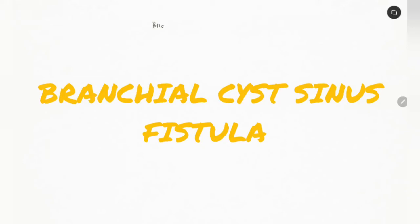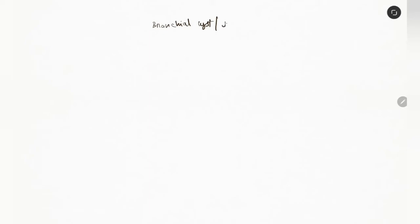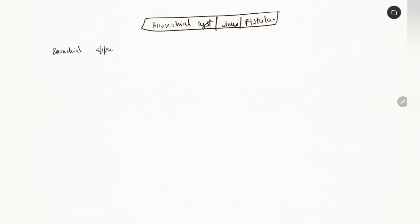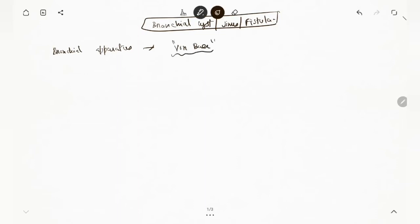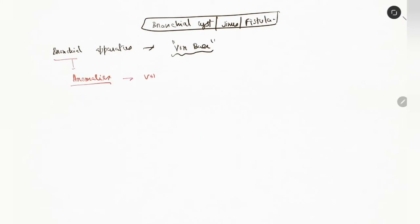Today we will discuss branchial cyst, sinus, or branchial fistula. The branchial apparatus was first described by von Baer, and branchial anomalies were described by von Ascherson.